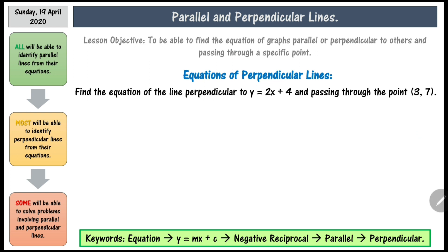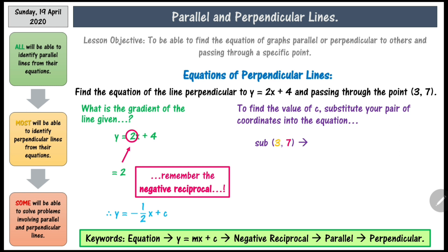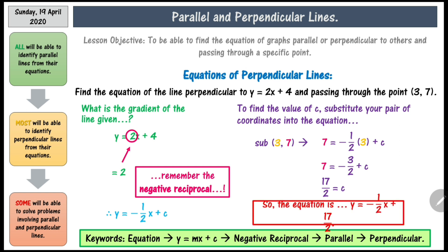The answer is as follows. The gradient is 2, so the negative reciprocal of 2 is minus one-half. Plugging the coordinates (3, 7) in gives 7 equals negative one-half times 3 plus c, which gives 7 equals minus 3 halves plus c. Adding 3 halves to both sides gives c equals 17 over 2, or 8.5. The final equation is y equals negative one-half x plus 17 over 2, or y equals negative one-half x plus 8.5.